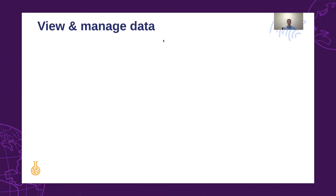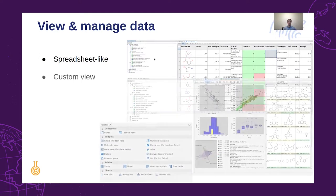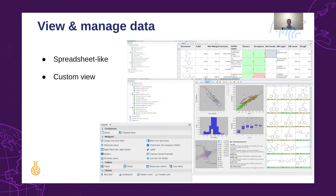IGC also provides powerful visualization tools. Chemical structures and the associated data can be visualized in a spreadsheet-like format with sorting, conditional formatting, and addition of columns. In custom formulas, numerous widgets can be used, such as charts, tables, and matrices, to create the most efficient view of our data.